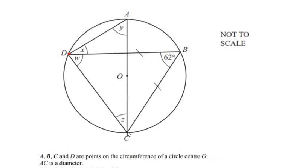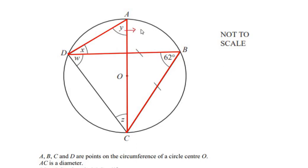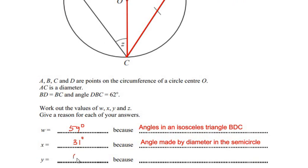Applying this to our problem: points D and C divide the circle into a minor and a major segment. The angle at point B in the major segment is 62 degrees, and the angle at point A in the same major segment is Y degrees. By the angles in the same segment theorem, Y = 62 degrees.